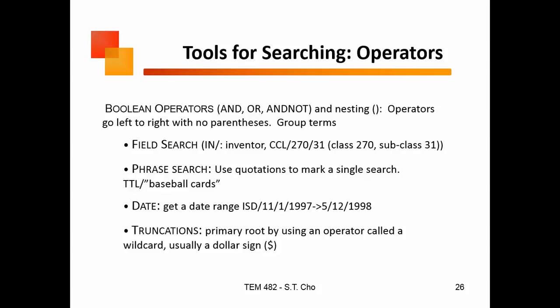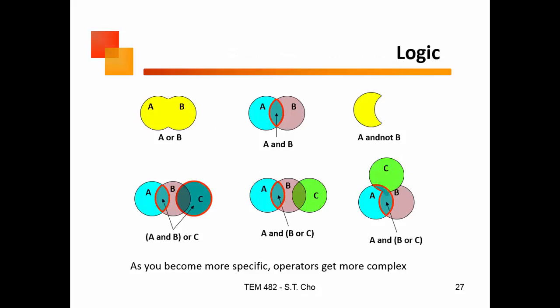For example, if you look up Dr. Cho's patents and you did 'cho-steve' as inventor, you're not going to find all of mine, because some of my patents are under 'Steve Cho' and some are under 'Steve T. Cho,' which includes my middle initial. So you could put a dollar sign after 'steve' as a wildcard and all of them will pop up.